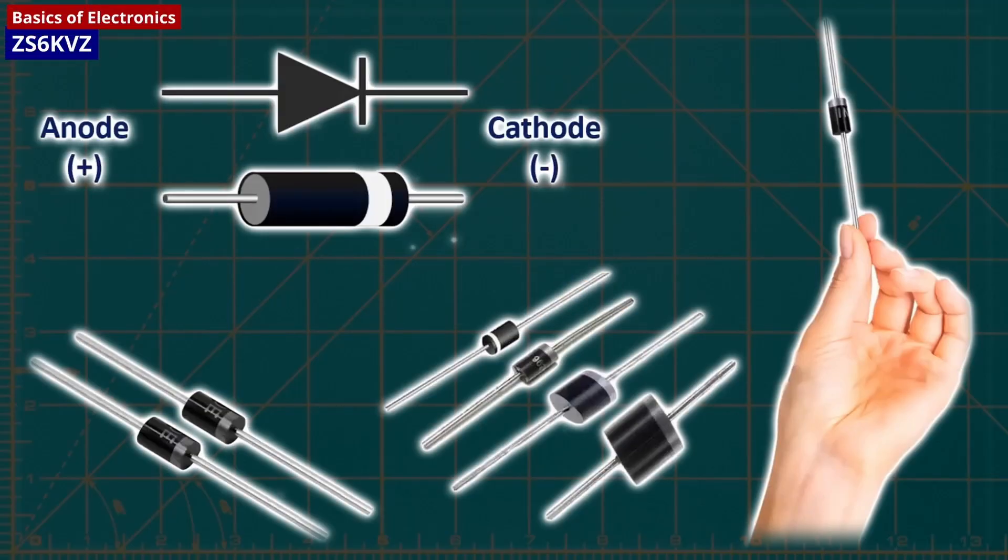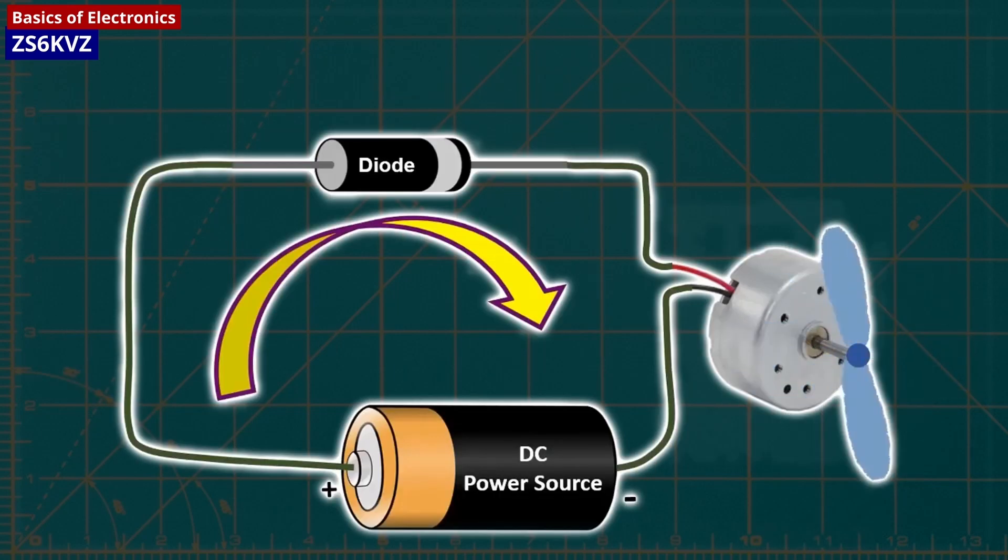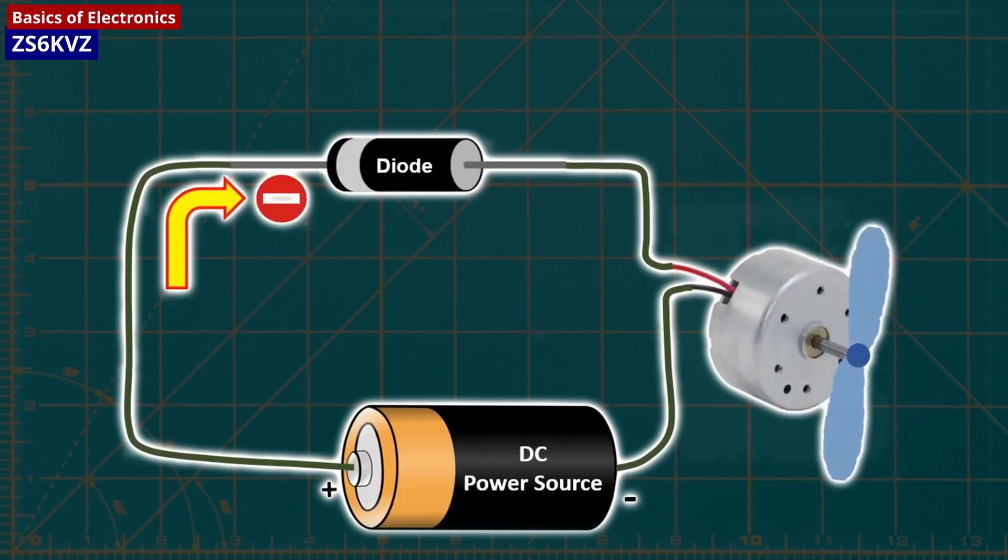Diodes are polarized components that allow electrical current to pass through them in only one direction, preventing electricity from flowing in the wrong direction in a circuit. They are represented in a schematic as a line with a triangle pointing at it, with the line connected to ground and the bottom of the triangle connected to power.